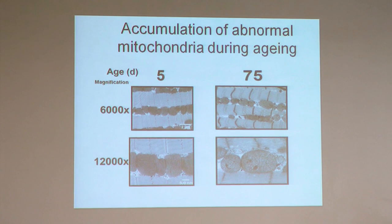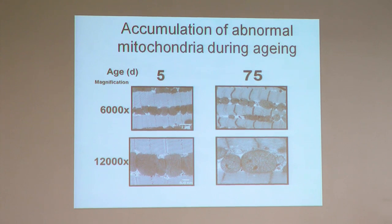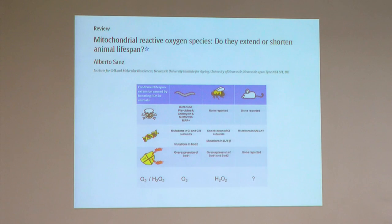Something that strongly supports the mitochondrial radical theory of aging is that during aging we accumulate defective mitochondria that don't work properly. This electron microscopy image from the fly muscle of Drosophila melanogaster shows that young flies have very round, ordered mitochondria. But when the flies get old, the mitochondria get deformed, they are bigger, and they accumulate dense inclusions in the cristae that prevent the mitochondria from working properly.